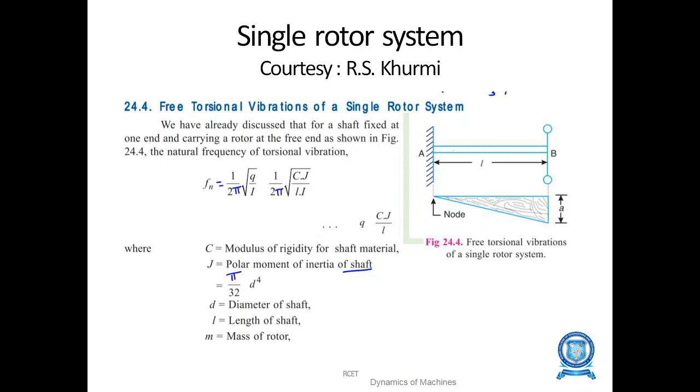Where C is the modulus of rigidity of the shaft material. J is the polar moment of inertia of the shaft, which is π by 32 d to the power 4, unit is meter to the power 4. D is the diameter of the shaft, L is the length of the shaft, and M is the mass of the rotor.